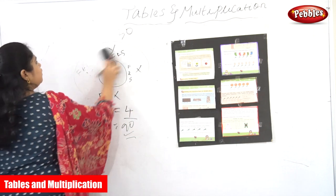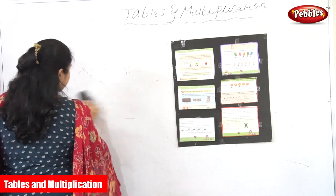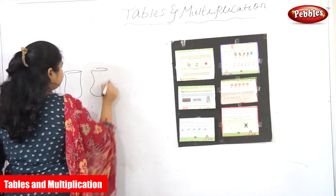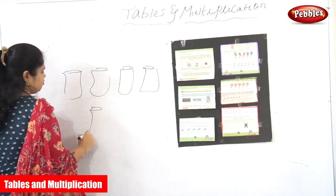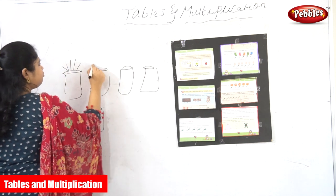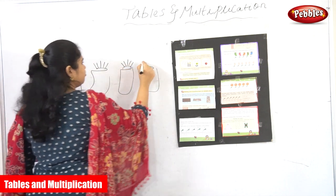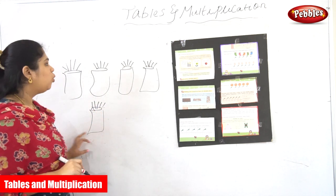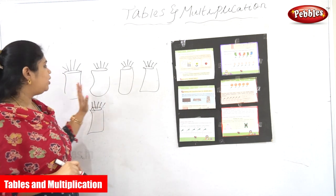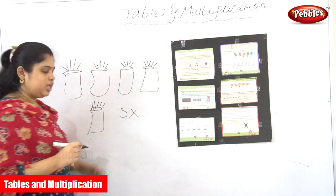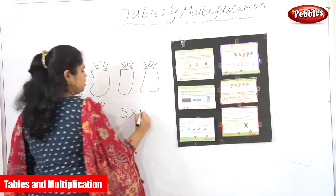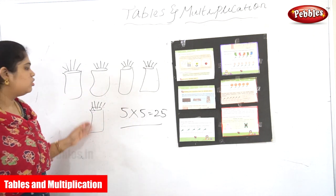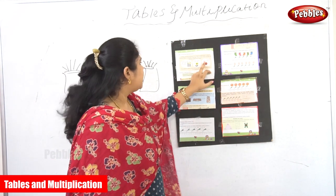Next example: putting five flowers in each vase. There are five flower vases in your home. Each flower vase has five flowers. I want to calculate how many flowers there are in total. There are five vases, and each vase has five flowers, so five into five is 25 — totally 25 flowers. That's how multiplication works here.